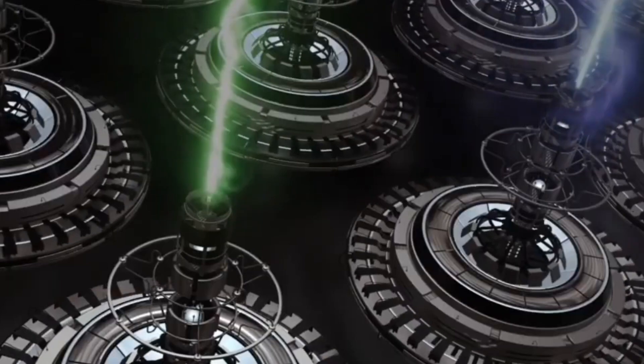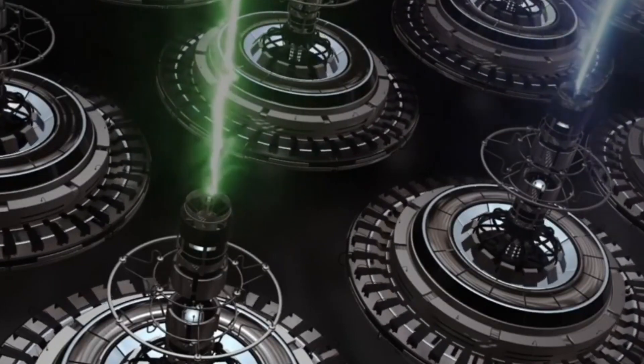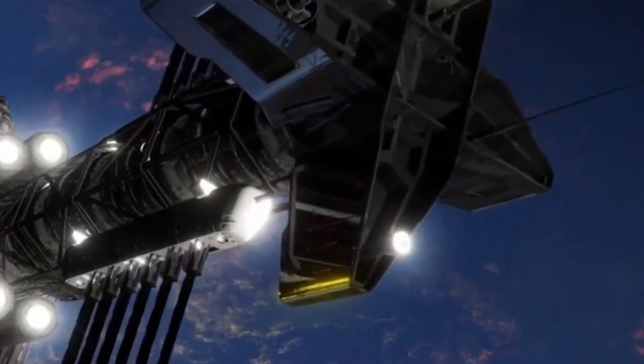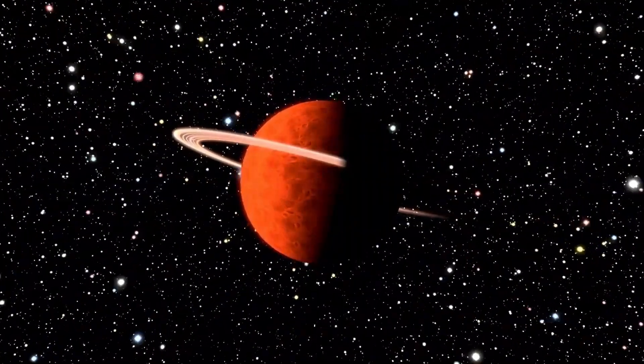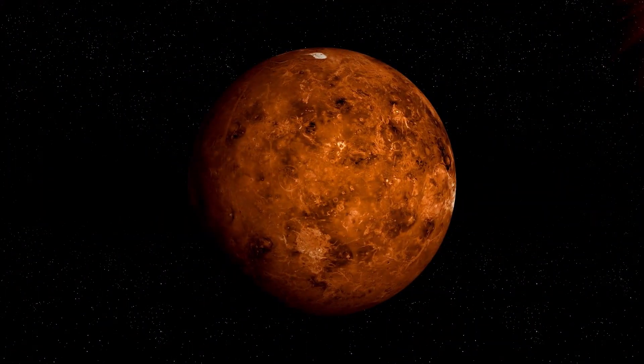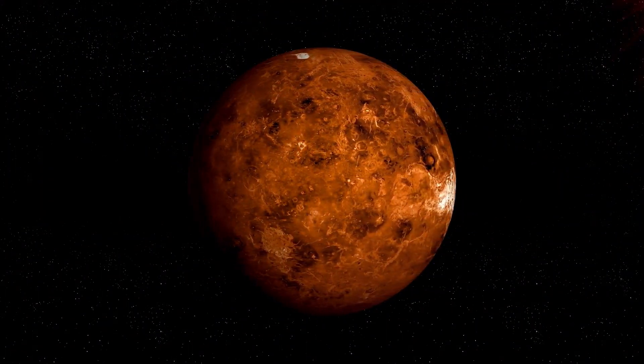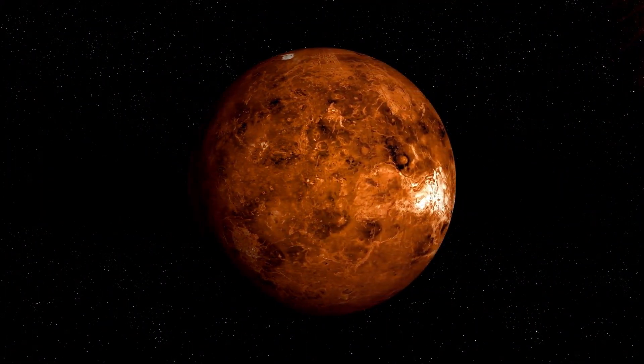Let's discuss Proxima Centauri, the star that Proxima b orbits. Proxima Centauri is part of the Alpha Centauri triple star system. This system includes Rigel Kentaurus, otherwise known as Alpha Centauri a, and Alpha Centauri b together. These stars form the closest star system to our solar system.